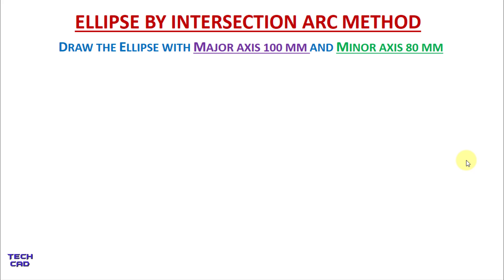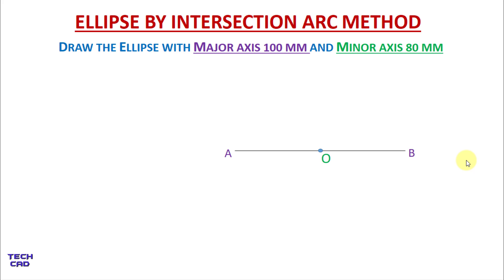First we have to draw the major axis and minor axis. The major axis is 100 mm and I will name it AB. After making this major axis, we find the midpoint — total is 100 mm so half is 50 mm — and name it O. From point O I will make a minor axis, 40 mm above and 40 mm downside, because the total minor axis is 80 mm, and I will name it CD.